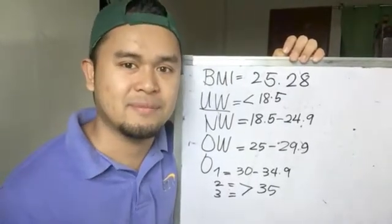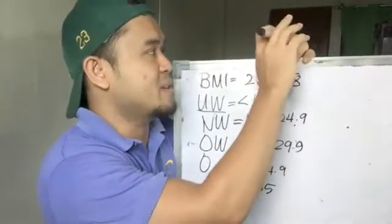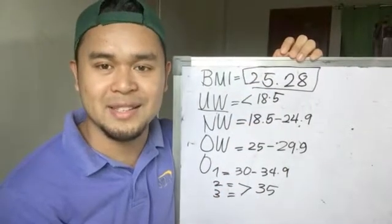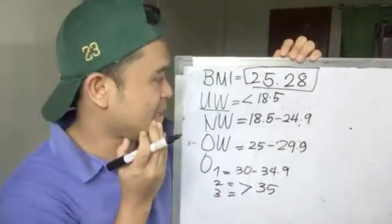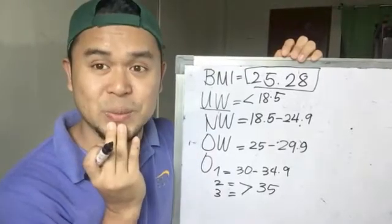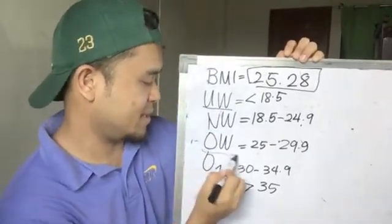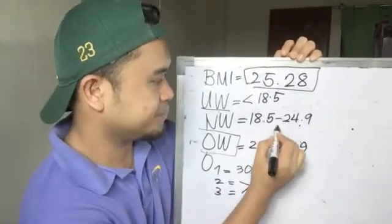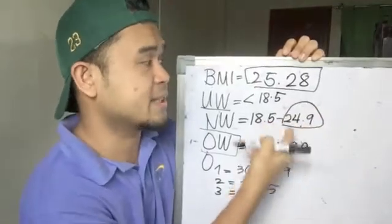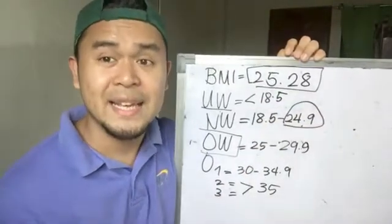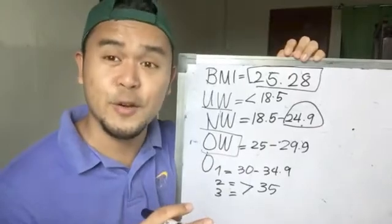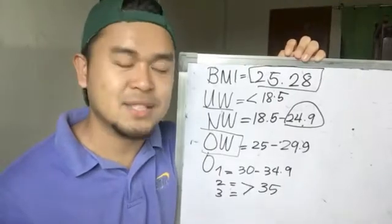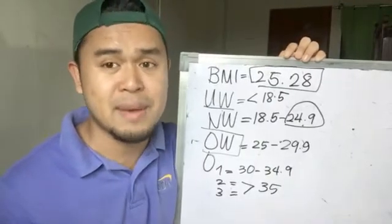My BMI is 25.28, so I fall in the overweight category — just barely, since the normal cutoff is 24.9 and I'm at 25.28. A little modification can help lower your BMI. That is how you compute your BMI.